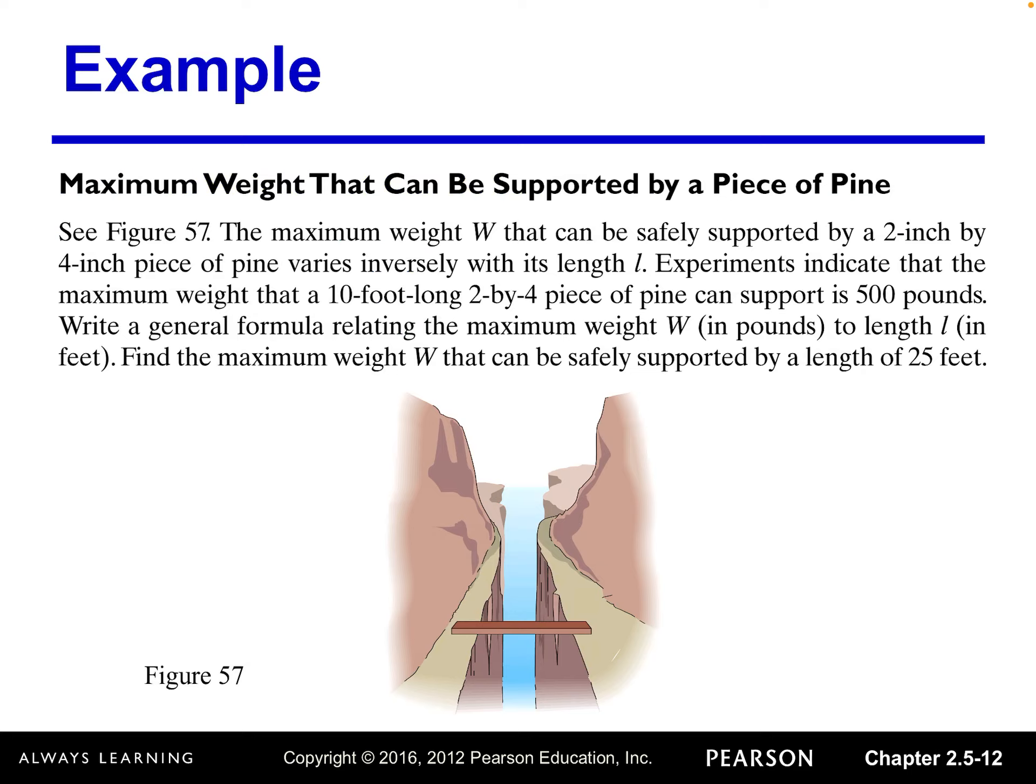So the first sentence of this problem tells us the relationship between the two variables, weight w and the length of the wood l. It says these two variables vary inversely. So when we read this sentence, we can write an inverse variation model, which is w, the maximum weight, equals k divided by l. l stands for the length of that 2 by 4 piece of pine wood.